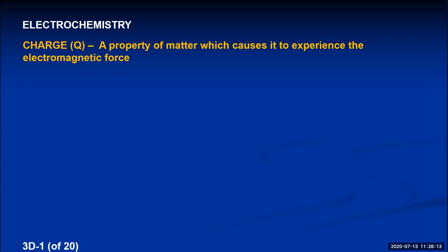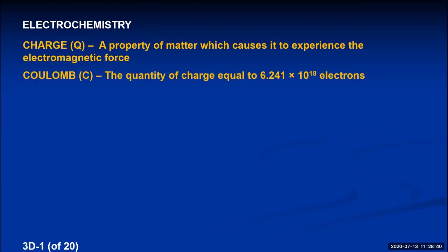In physics, we believe this occurs because electrons and protons exchange photons between each other. If two electrons exchange photons, they repel. If an electron and a proton exchange photons, they attract. So if you're a particle able to exchange photons with other particles, you possess charge. We measure charge in units of the Coulomb, abbreviated by a capital C. It's the quantity of charge equal to 6.241 × 10¹⁸ electrons.